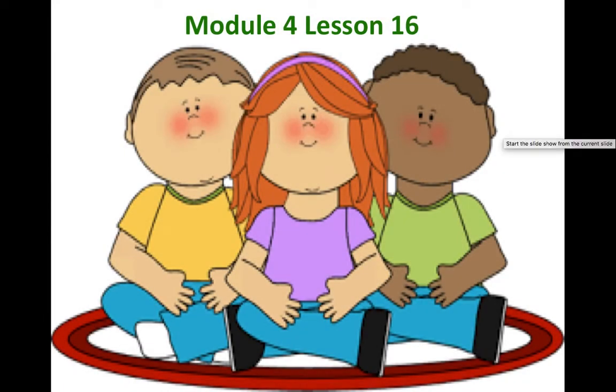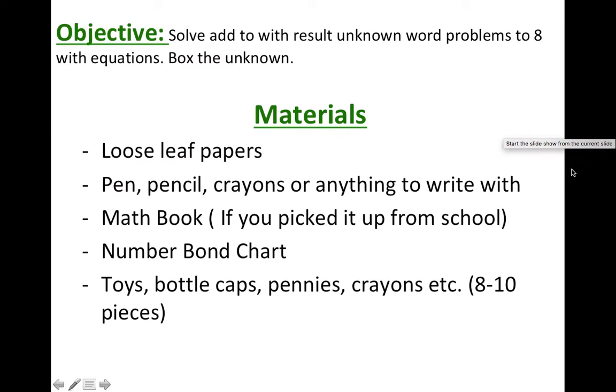So today we have module 4 lesson 16 and the objective of the lesson is to make 8 using number bond and a number sentence when one of the parts are missing.